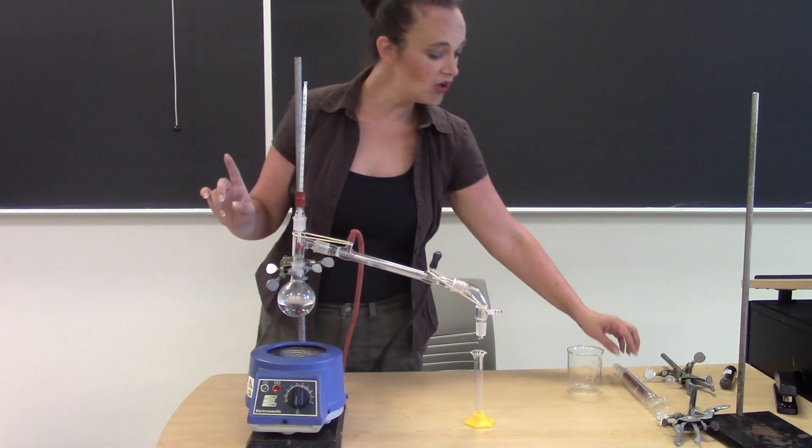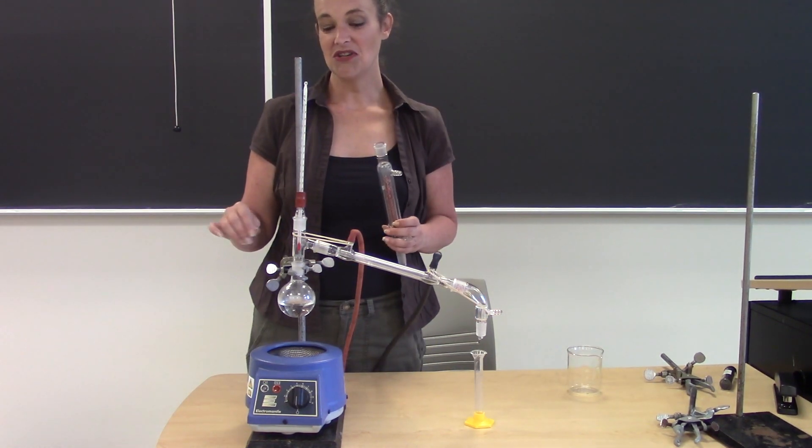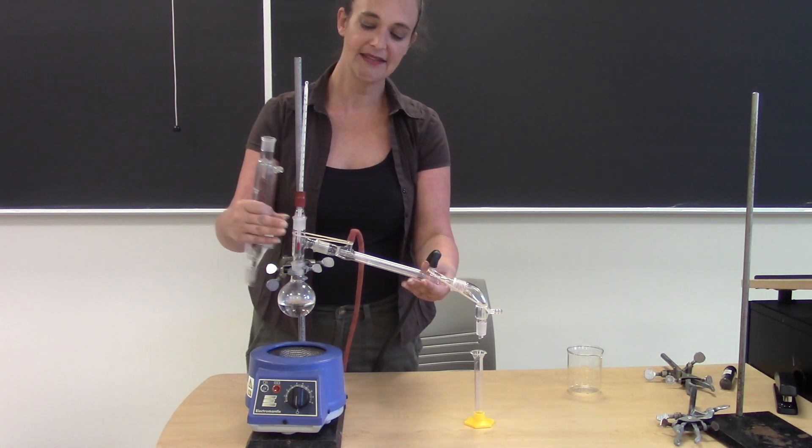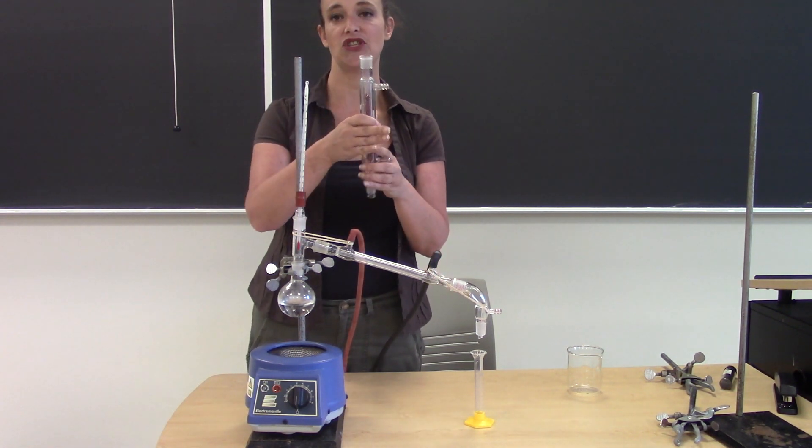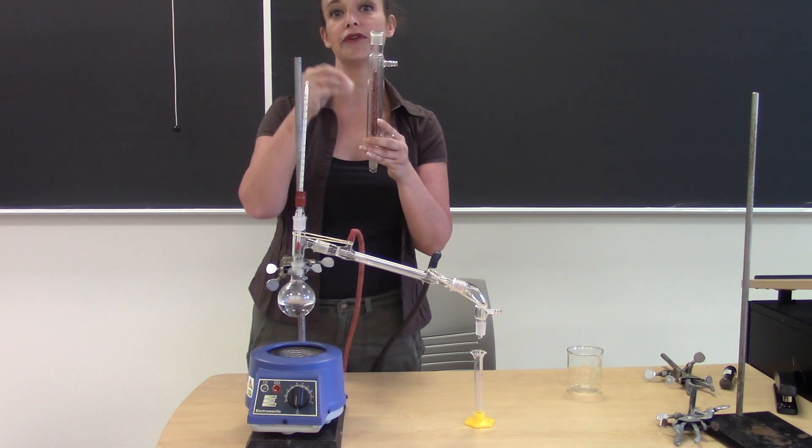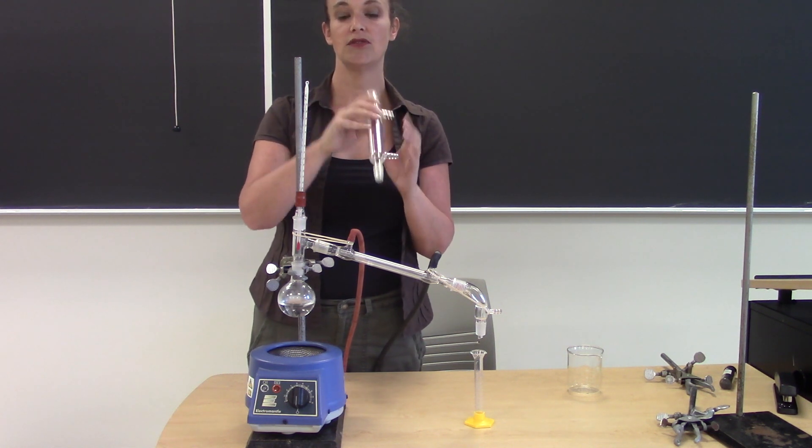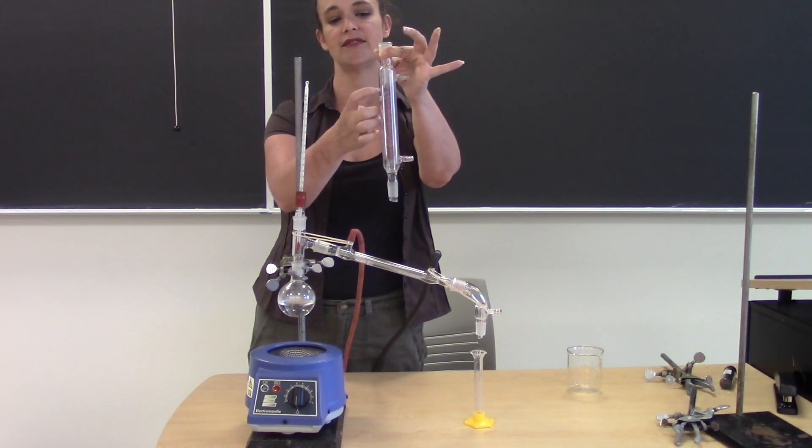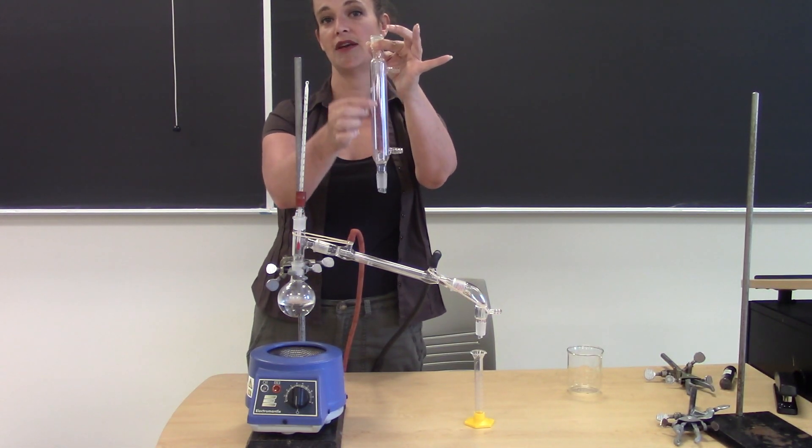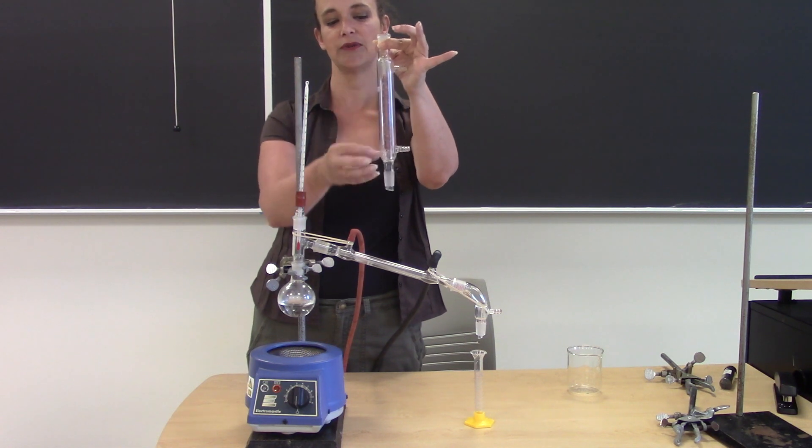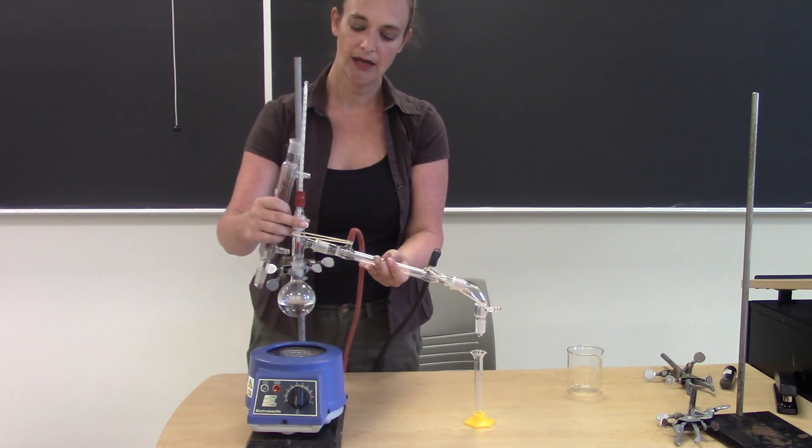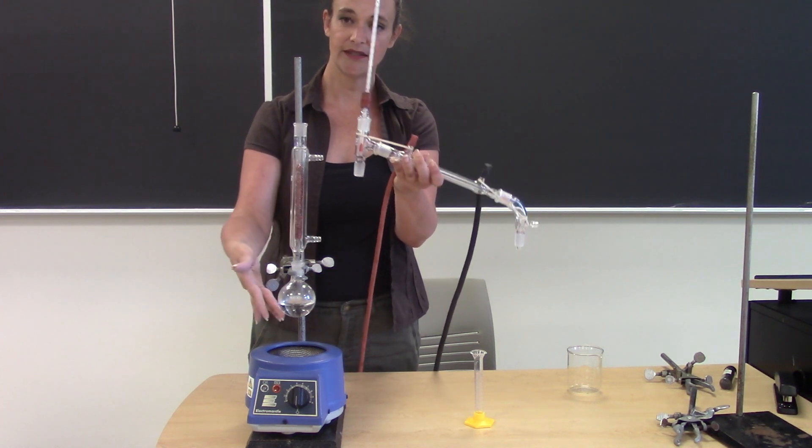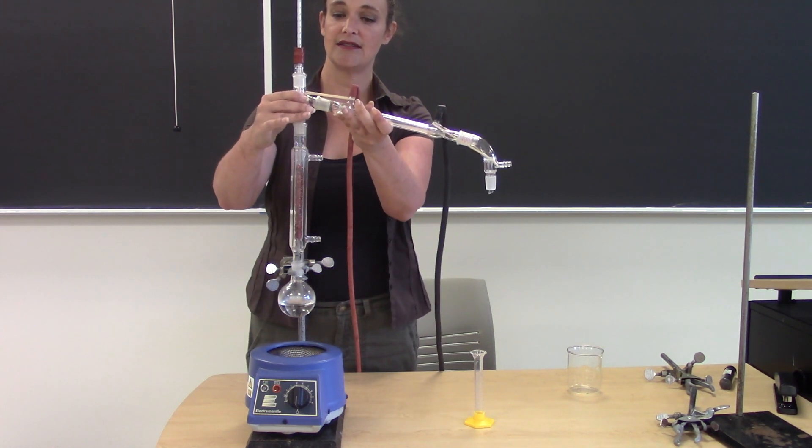We can also modify this to do what is called a fractional distillation. Now a fractional distillation takes a simple distillation and has it repeat itself over and over and over again. And so what we're going to do is put this column, which has some copper mesh embedded inside where the vapor is going to flow. We are going to put that in between the distilling flask and the distillation adapter.